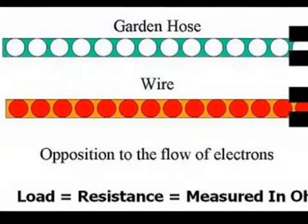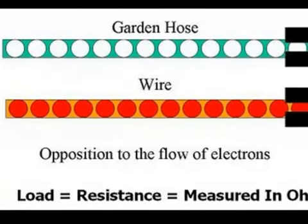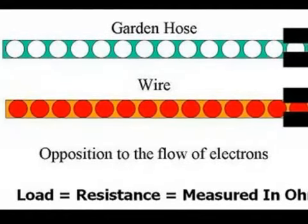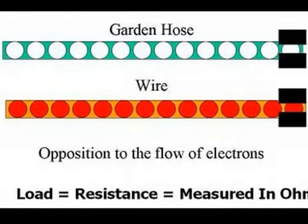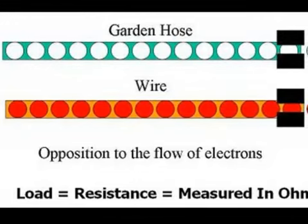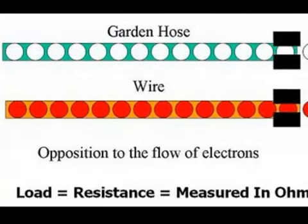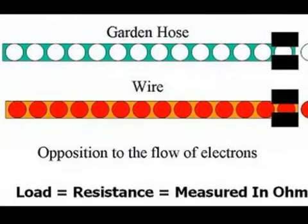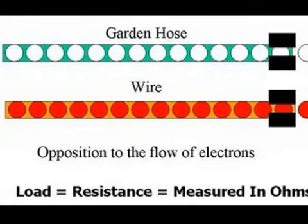When we hook up a load, we are hooking up any device that can do work for us. This can be a light bulb, a motor — anything electrical that's trying to do work for us is a load. And a load exhibits some kind of resistance to that flow of electrons. We can measure the amount of resistance in a unit called ohms. The higher the resistance, the harder it is for electrons to flow.